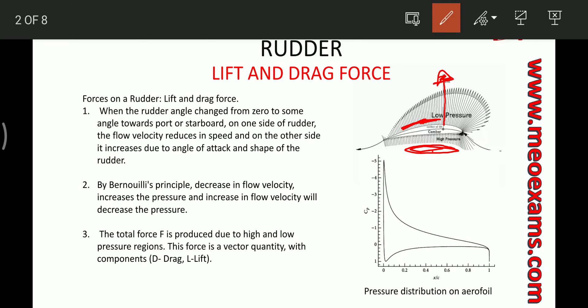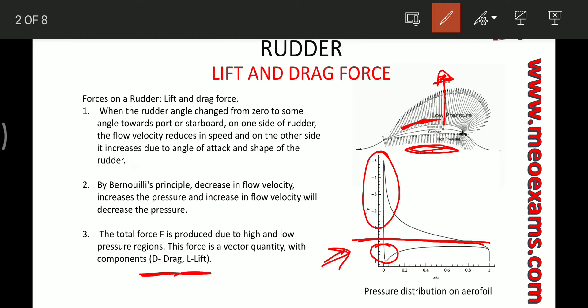As you can see from this diagram, if this is the zero line or the chord, on one side there is negative pressure and on the other side there is positive pressure on the profile. Because of this difference in the pressure regions, a net resultant force is produced on the rudder. This resultant force is divided into two components called the drag force and the lift force. Let's see what these forces are and how they help in turning the ship.